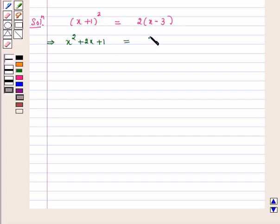This can be rewritten in the form x square plus 2x minus 2x plus 1 plus 6 equals 0. Or on canceling the like terms, we get x square plus 7 equals 0.